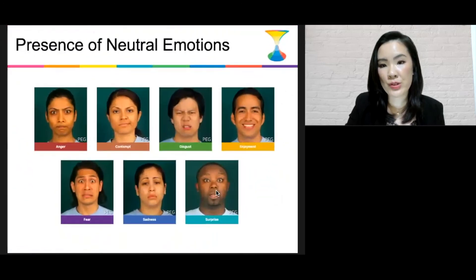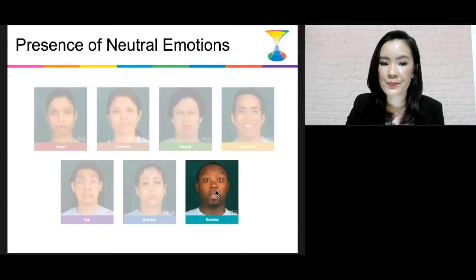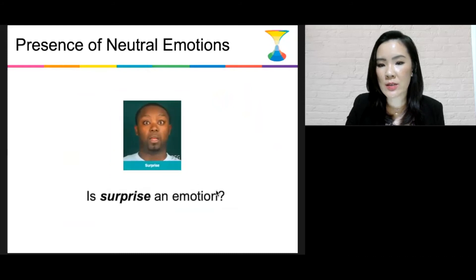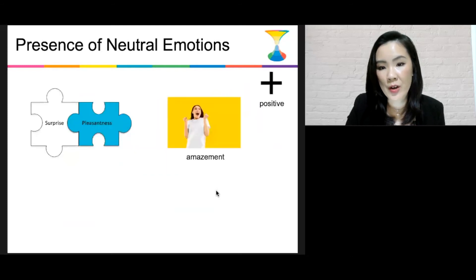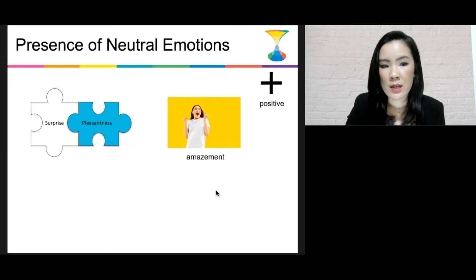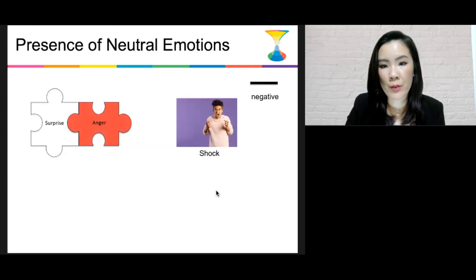There is also a presence of neutral emotion in the old hourglass. In Ekman's model, surprise is considered one of the basic emotions. However, recently, emotion researchers like Ortony started to question whether surprise can even be considered an emotion. We do not want to debate whether surprise is an emotion or not, but we definitely do not want it in our model catered for sentiment analysis, as this leads to wrong categorization of concepts semantically associated with it. Surprise only becomes polar when coupled with positive or negative emotion. For example, surprise combined with pleasantness results in a positive emotion such as amazement, while surprise combined with anger results in a negative emotion: shock.